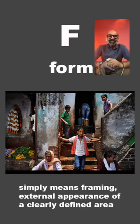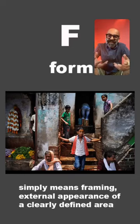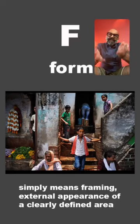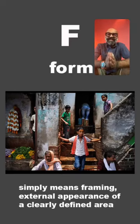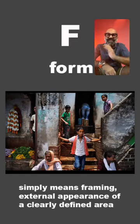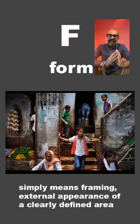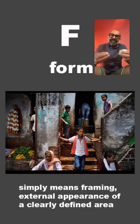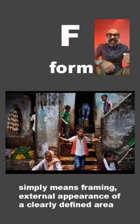F is form — a four-letter word, but very strong. It simply means the external appearance of a clearly defined area, and it relates to composition. When you look at a picture, it needs balance — how your eye moves in the frame left to right, right to left, and how it stays in the center. Every corner of the frame should give the viewer something to look at, enough breathing space, and exiting space as well.